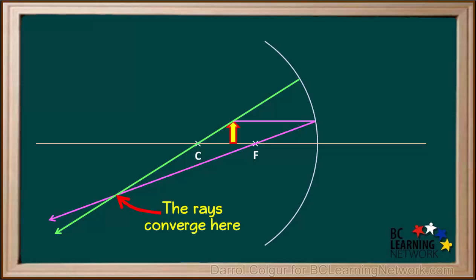These two reflected rays from the top of the object, the purple and the green one, converge at this point. So this point will be the top of the object in the image.